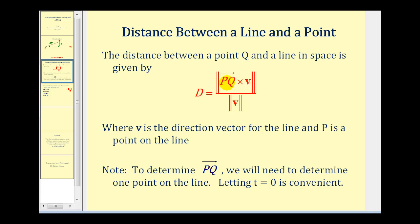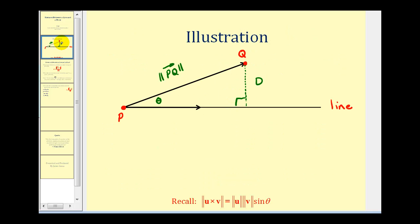Let's take a look at an illustration of where this formula comes from. If we let this be the line we're considering, point P is a point on the line and point Q is a point not on the line. So vector PQ represents that segment, and the magnitude of vector PQ is that length. We're trying to find the distance from the line to the point, which is this distance here.